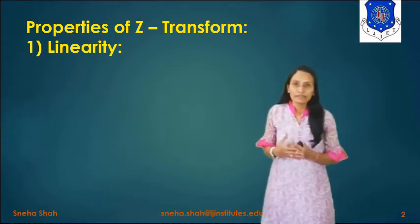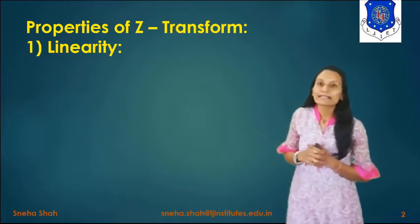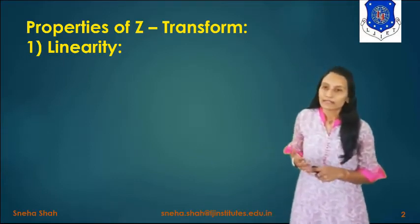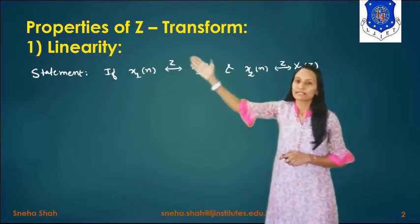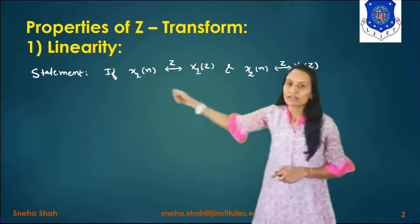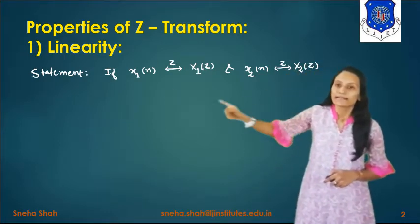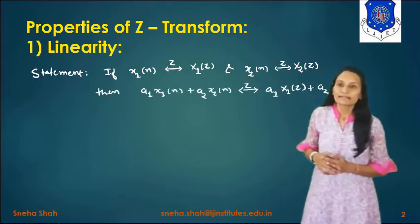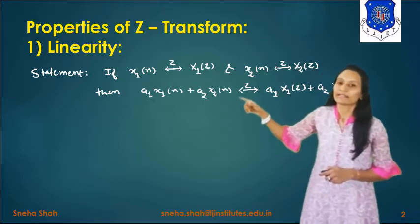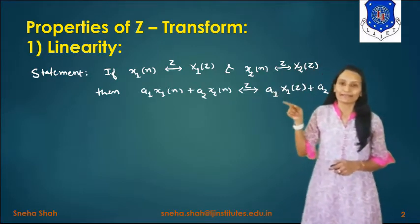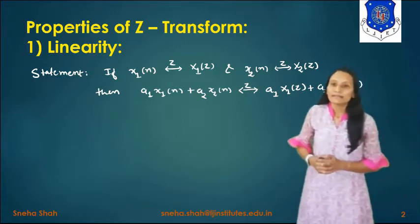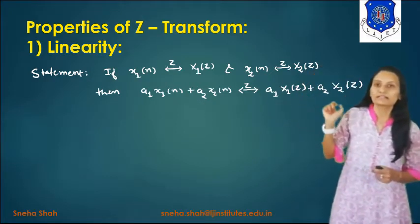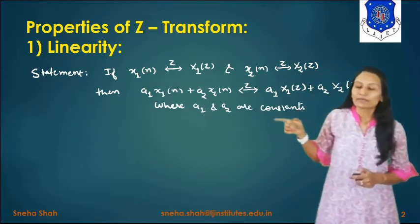For any property of Z-Transform, we first write the statement, then we prove it. The statement for the linearity property is: if we take two signals x1(n) and x2(n) and find their Z-transforms, giving X1(z) and X2(z), then the linearity property states that a1·x1(n) + a2·x2(n) transforms to a1·X1(z) + a2·X2(z). Here a1 and a2 are constants. This means a linear combination in the time domain corresponds to a linear combination in the Z-domain.